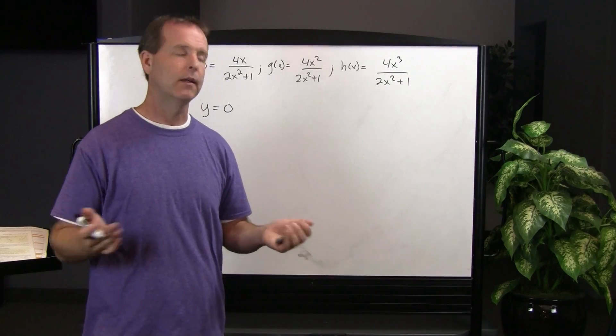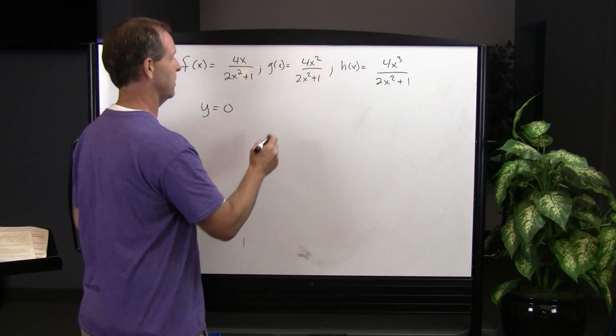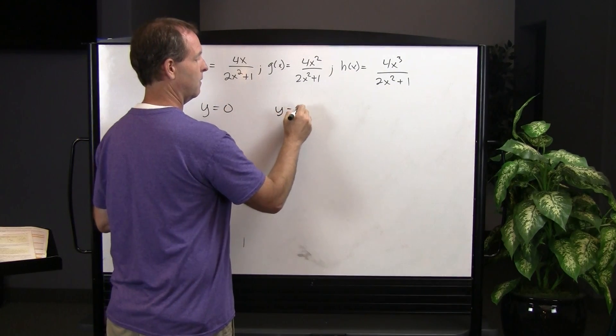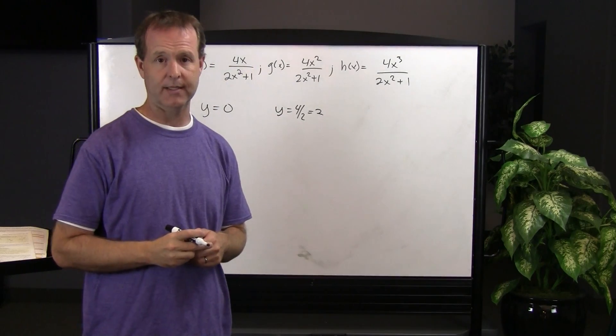but where? We have it at the ratio of their coefficients, at four divided by two. So at the line, four halves or two, is where that horizontal asymptote is at.